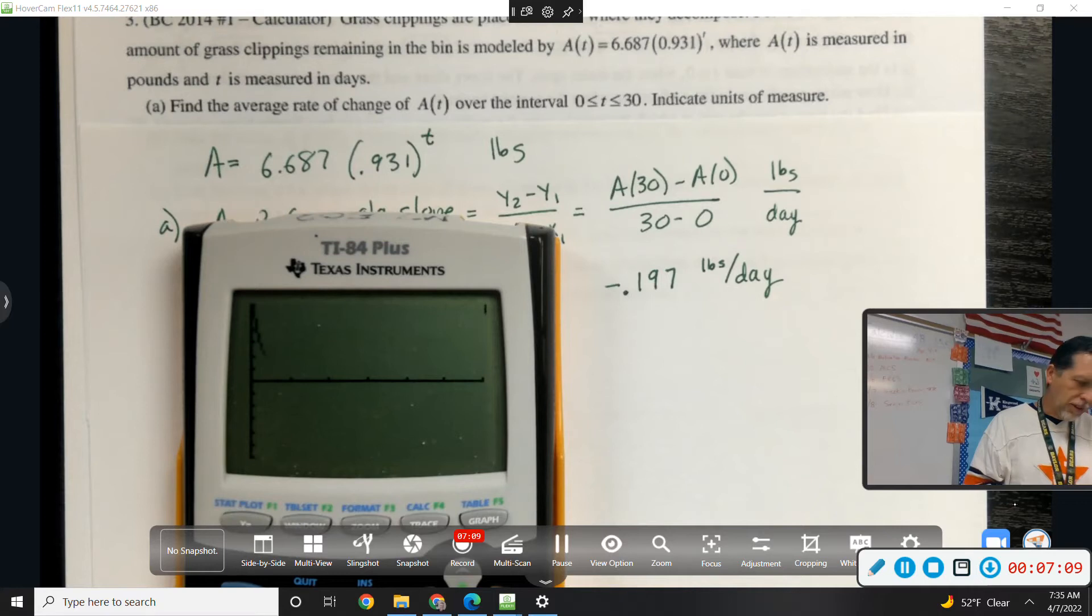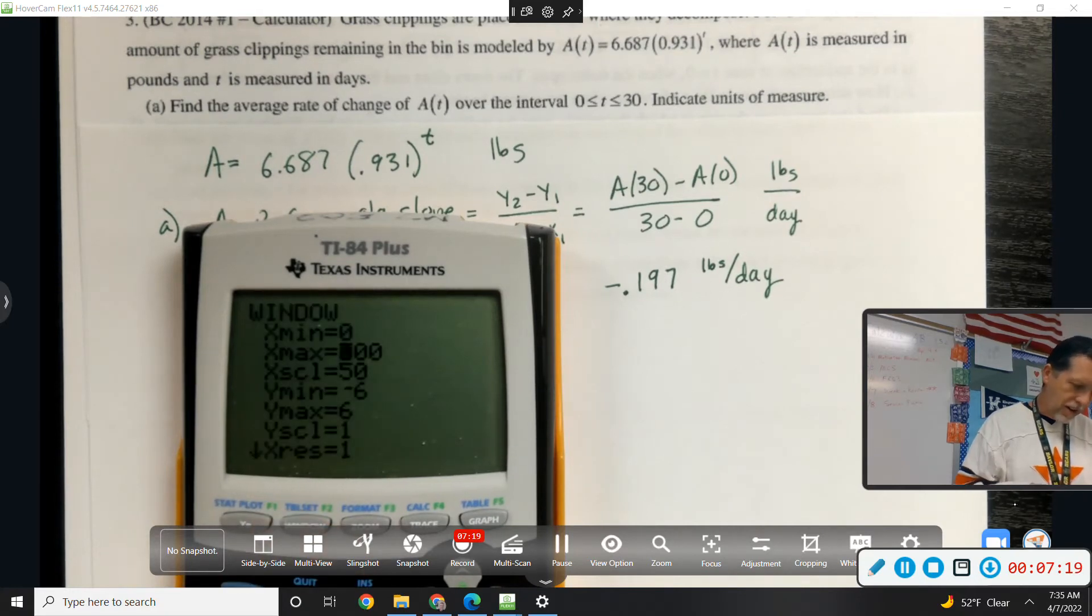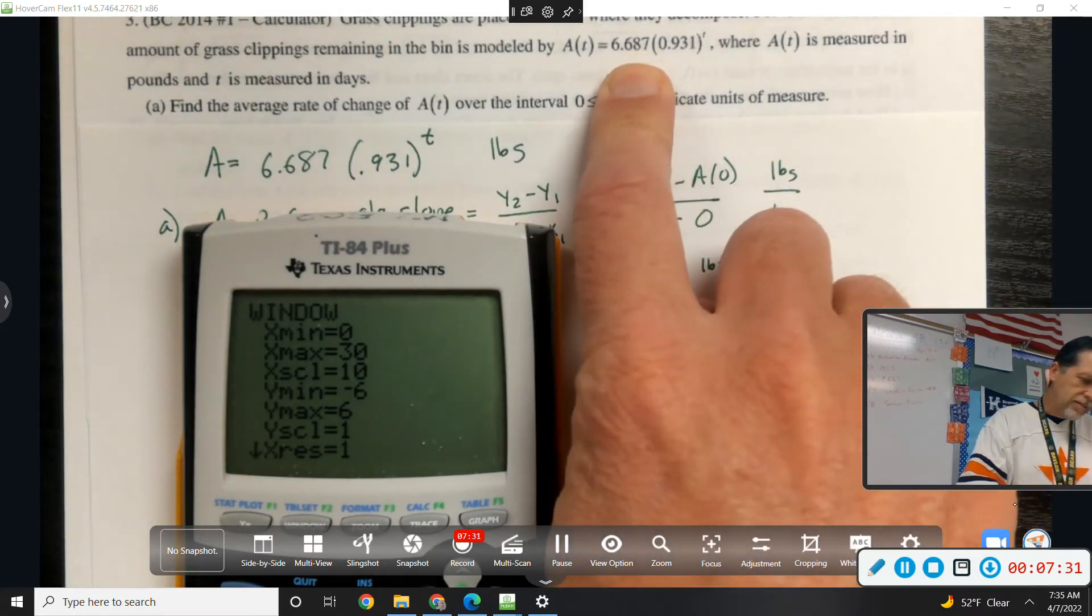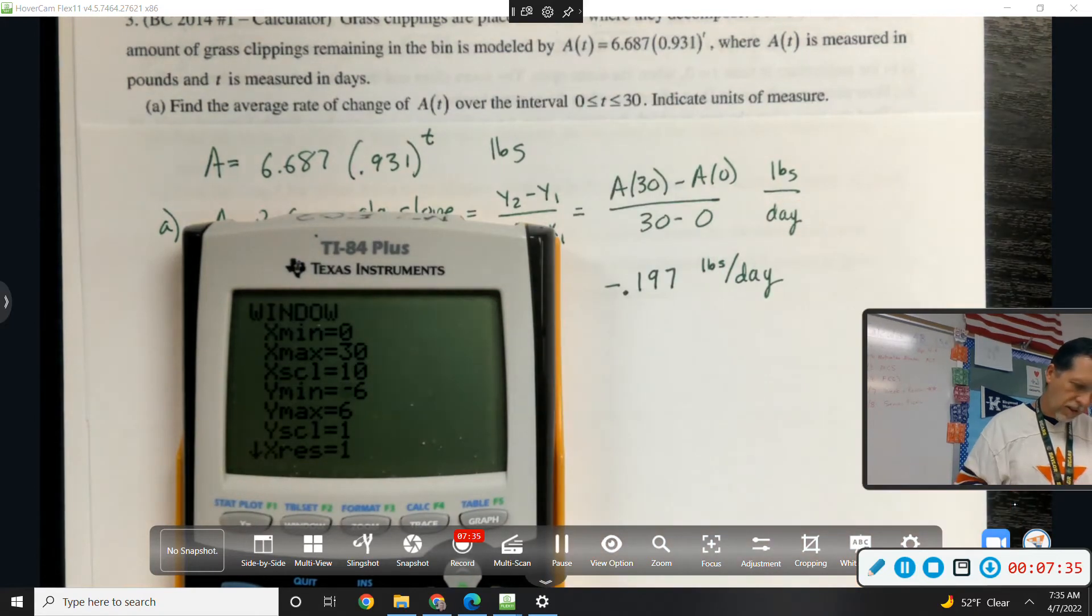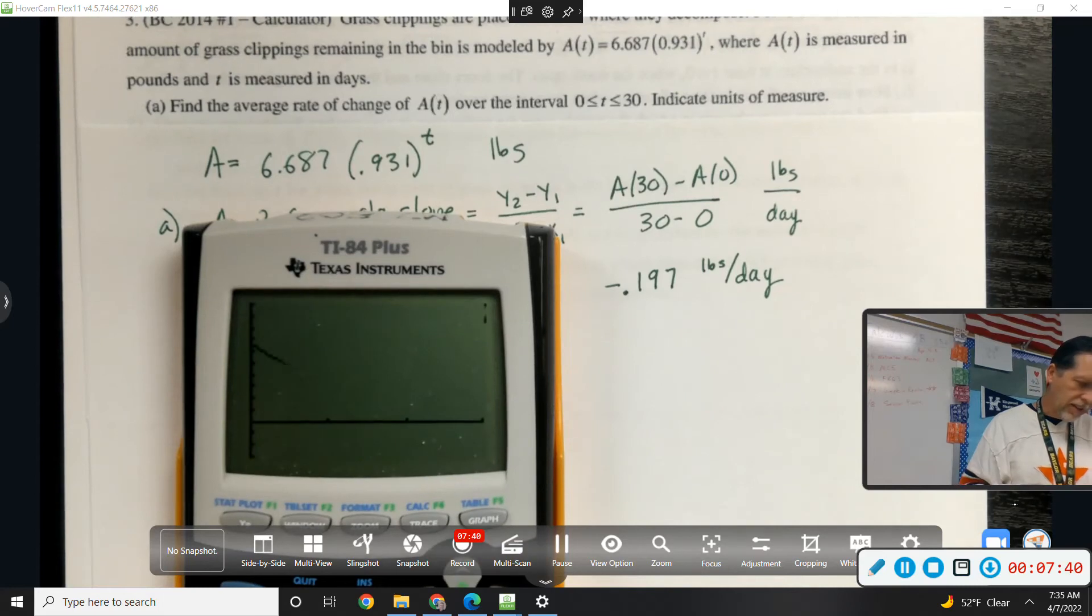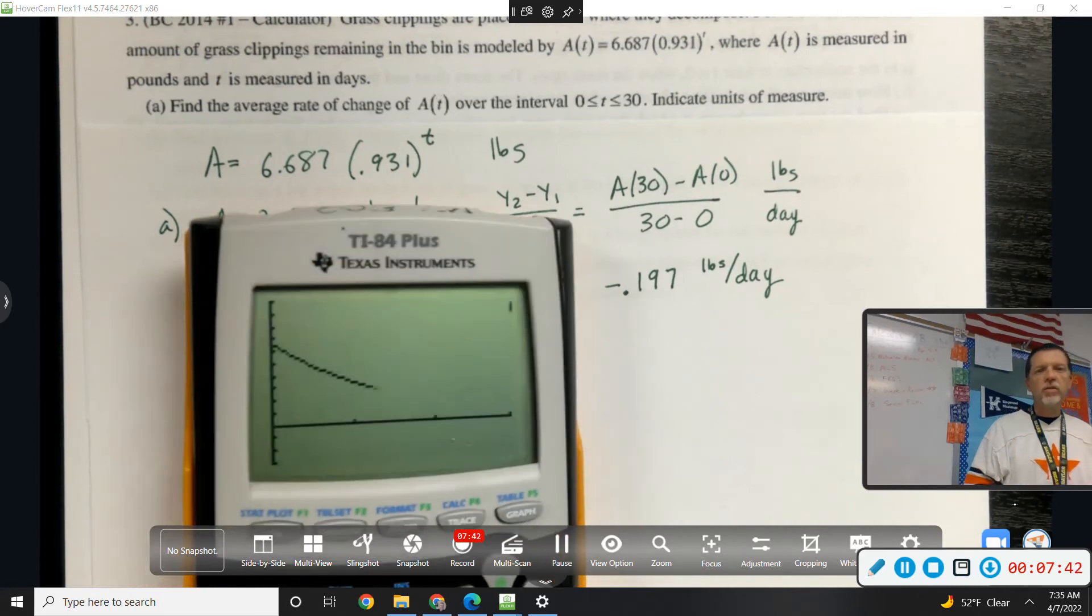I suppose we could even look at the graph of it. It even said 0 to 30, so I can just graph this thing from 0 to 30. It would start at 6.687, so we can just start at 10. There we go. So there's a picture of what's happening.